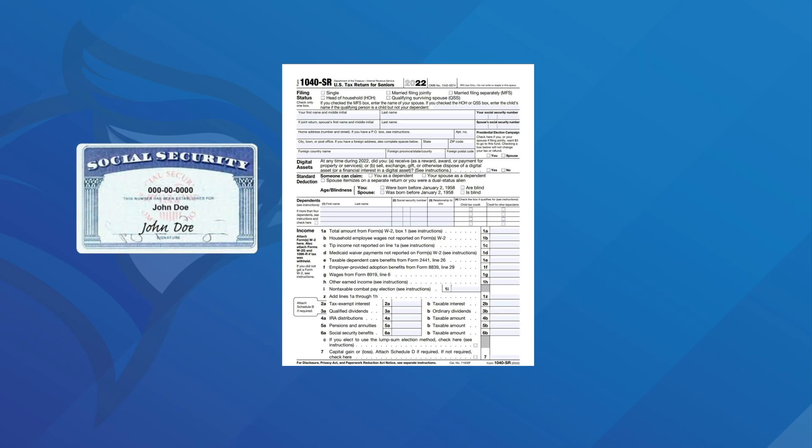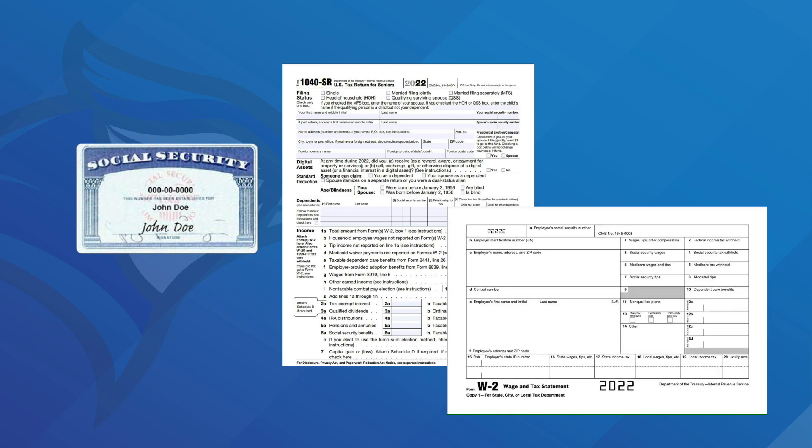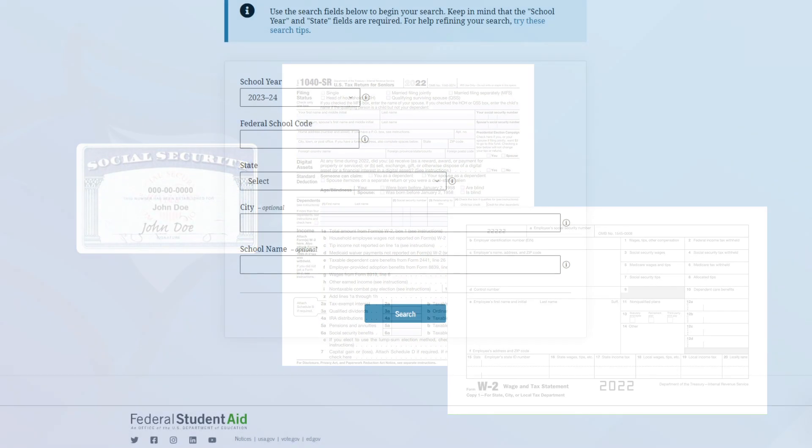You'll need your social security number, federal income taxes, W-2s, and other income forms.